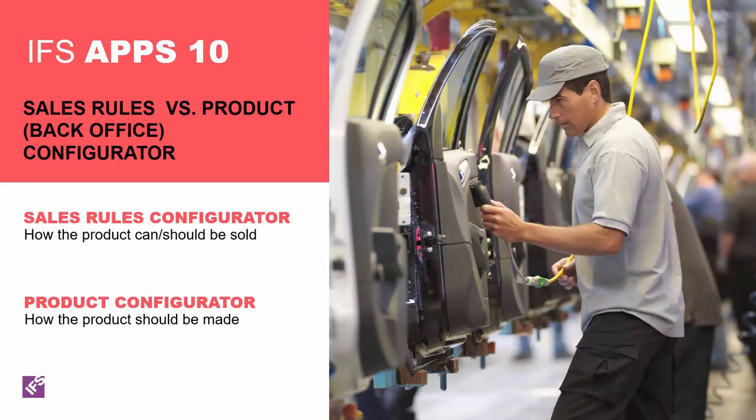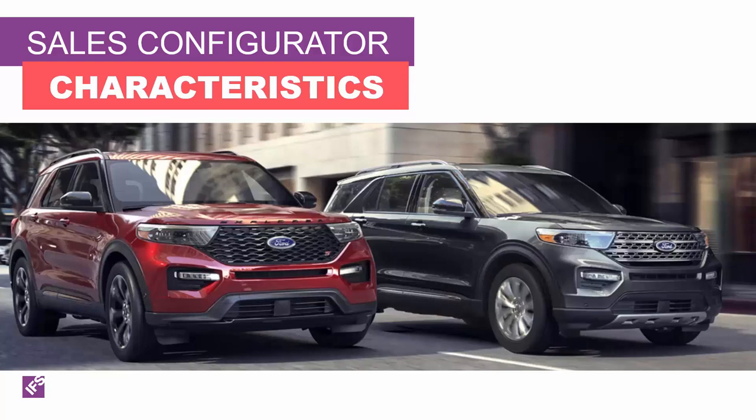Let's distinguish product configurator from sales rule configurator. The sales rule configurator defines how the part is sold — what features are available to the customer, and what options are valid for those chosen features. The product configurator, also known as the back office configurator, defines how the part is made: materials and guidelines defined in structures, and operations and work instructions defined in routings. The sales configurator guides the salesperson or customer through the product configuration process.